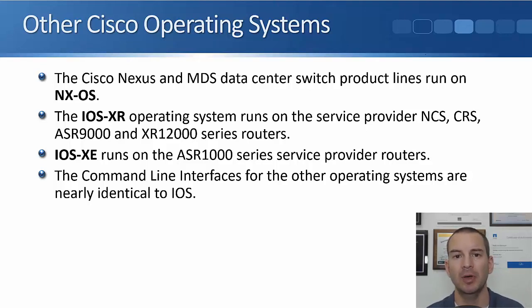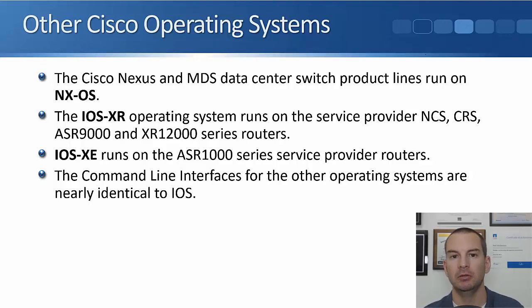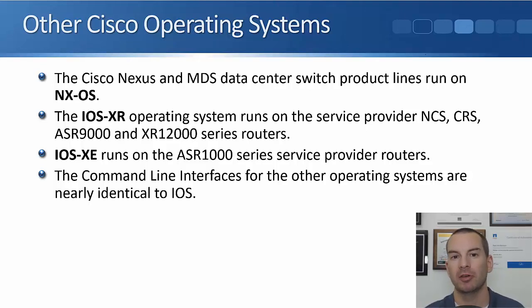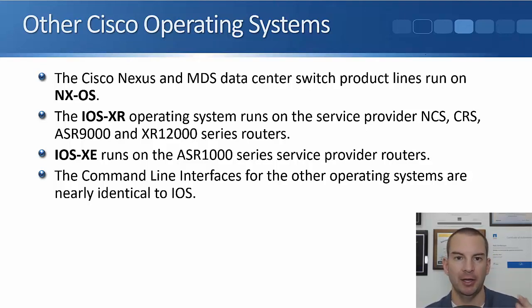If managing them is exactly the same, why are there different operating systems? The main reason — and where they're different — is under the hood. iOS has got a monolithic kernel, meaning that if one process running on the router crashes, it can crash the entire router. The other newer operating systems have micro kernels, and processes run in separate protected memory address space, so if one process crashes it shouldn't affect the rest of the system. These other operating systems are mainly on the higher-end routers and switches, but on enterprise-grade routers and switches they're still running iOS.